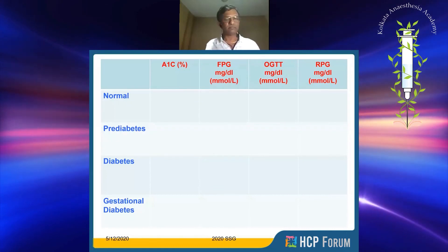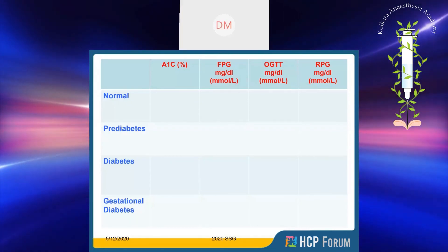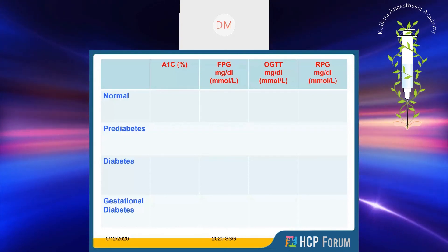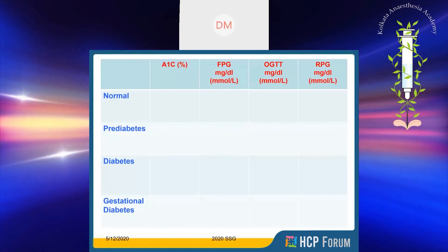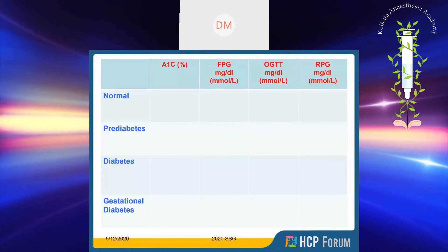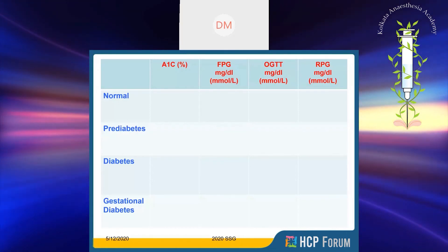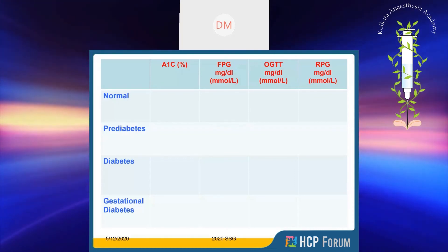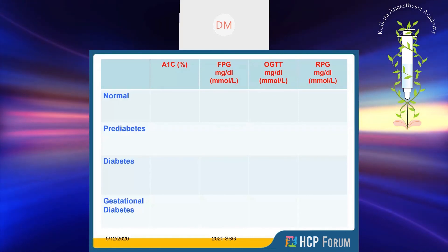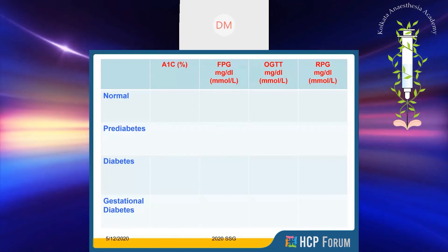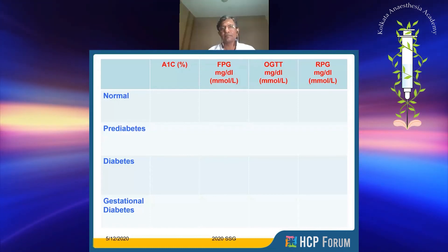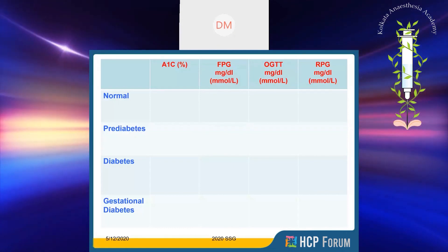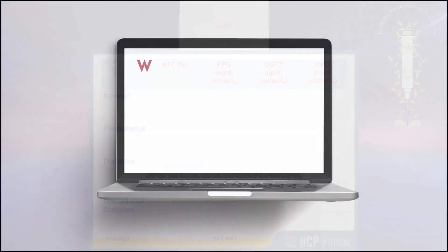A normal person — when fasting, the result comes down to less than 126 milligrams per deciliter. The postprandial comes out to less than 140 milligrams per deciliter. And hemoglobin A1c levels are less than 6.5 percent.